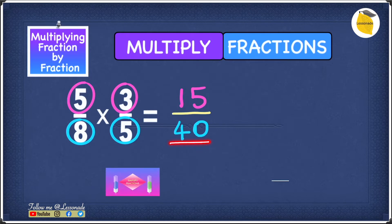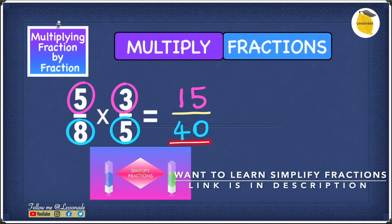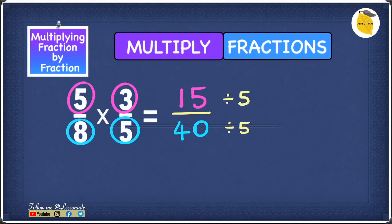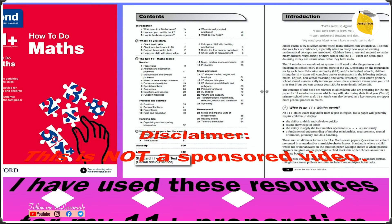The final step is to simplify if you can. In 15 over 40, both 15 and 40 are multiples of 5, so we can simplify. We divide 15 by 5 to get 3, and divide 40 by 5 to get 8. So the answer for this example is 3 over 8.